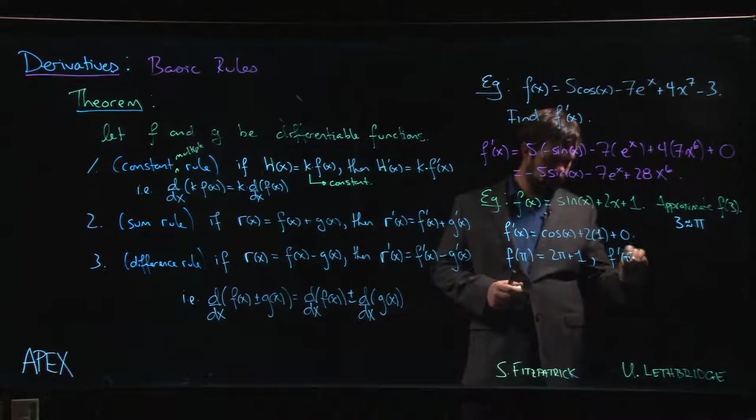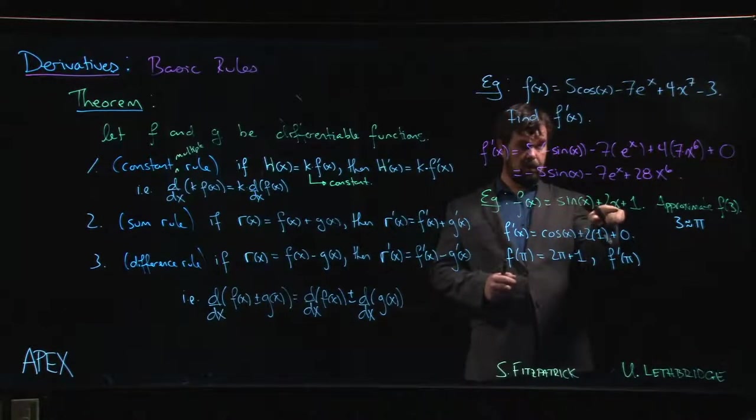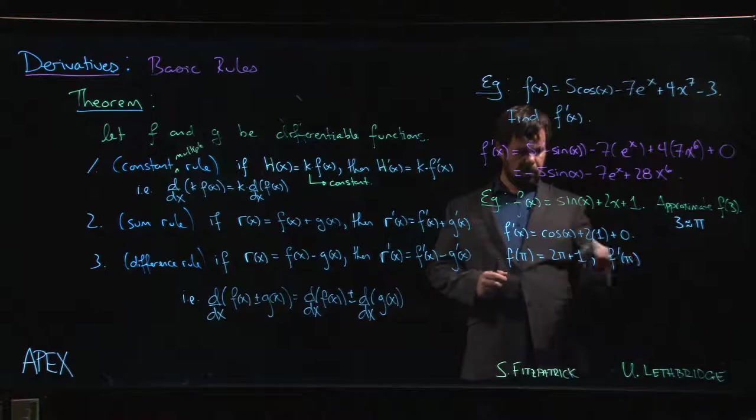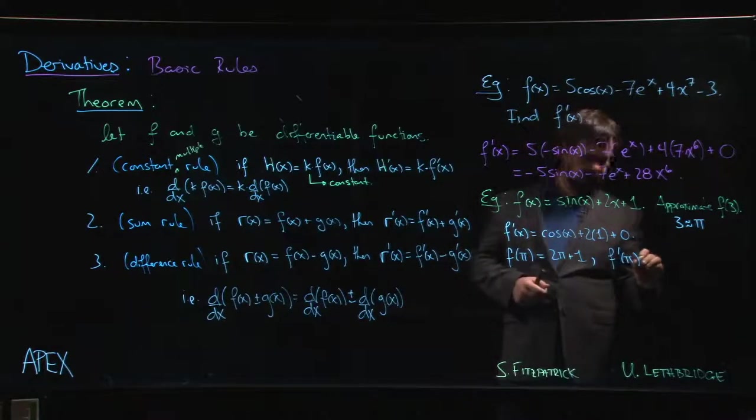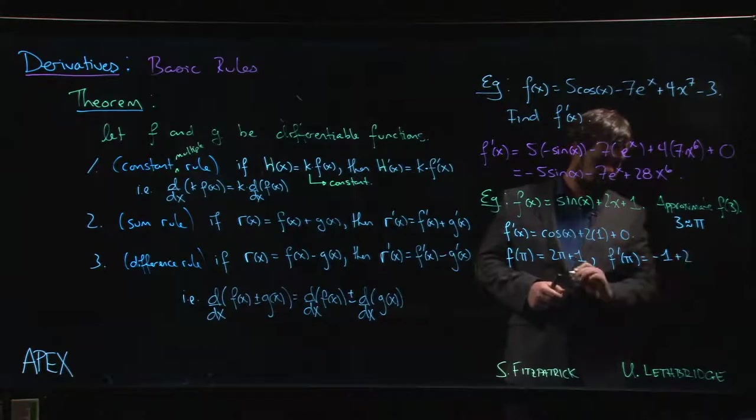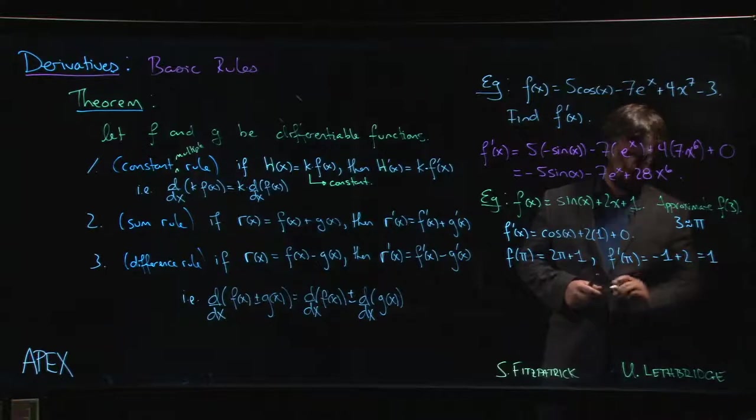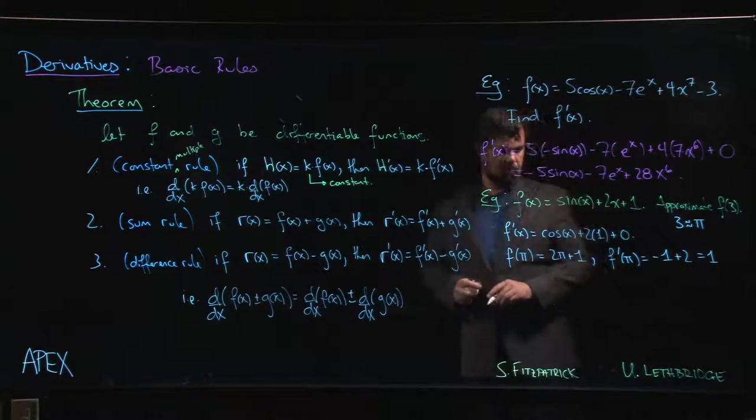Right, so two pi plus one. Cosine of pi is zero, two times pi plus one. F prime of pi, cosine of pi is minus one plus two, plus zero, so we get one.